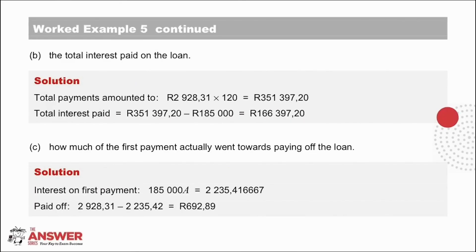For part B, to calculate the total interest paid on the loan, ask: how much was actually paid? The total amount paid was the rounded-off amount from part A, made 120 times — that gives the total actually paid. The loan was R185,000. The difference between these two amounts is the interest. It is quite significant: the interest paid is only just less than the initial value of the loan.